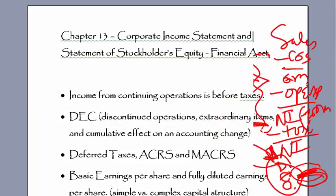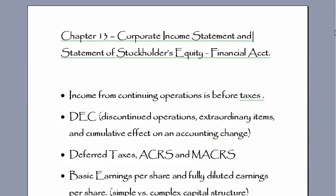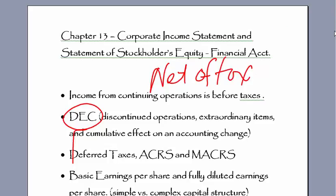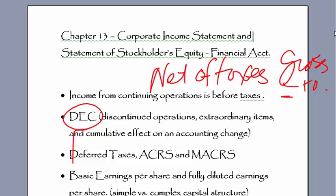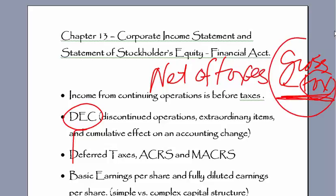An interesting thing to note is that with this DEC, it's all done net of taxes. You figure out what the gross amount is, deduct any tax implications — whether it's a tax savings or a tax deductible loss — and you're looking at the cash flow value. So we just say net of taxes.